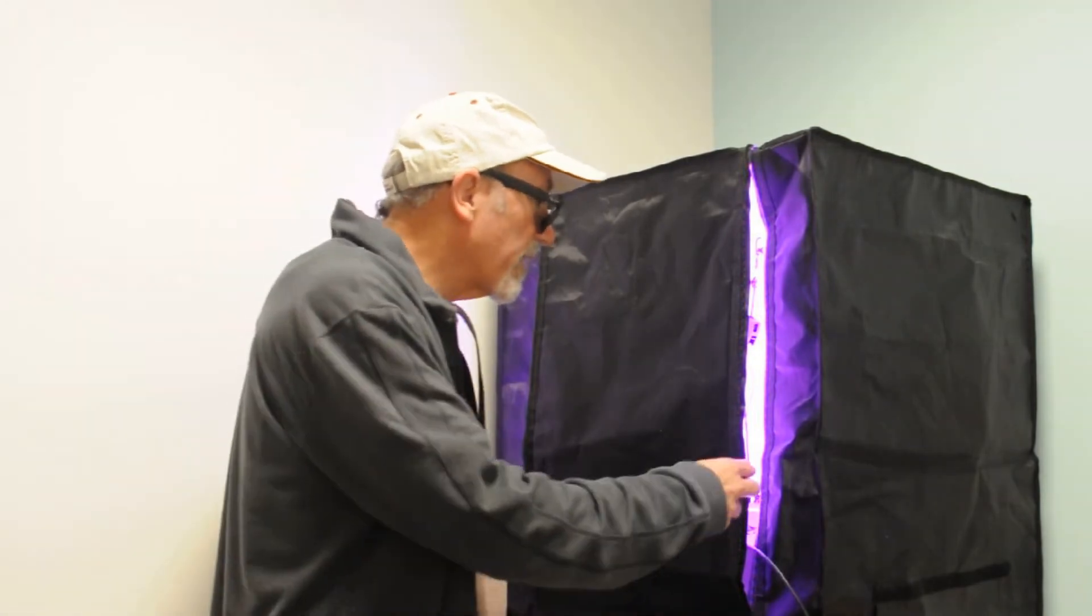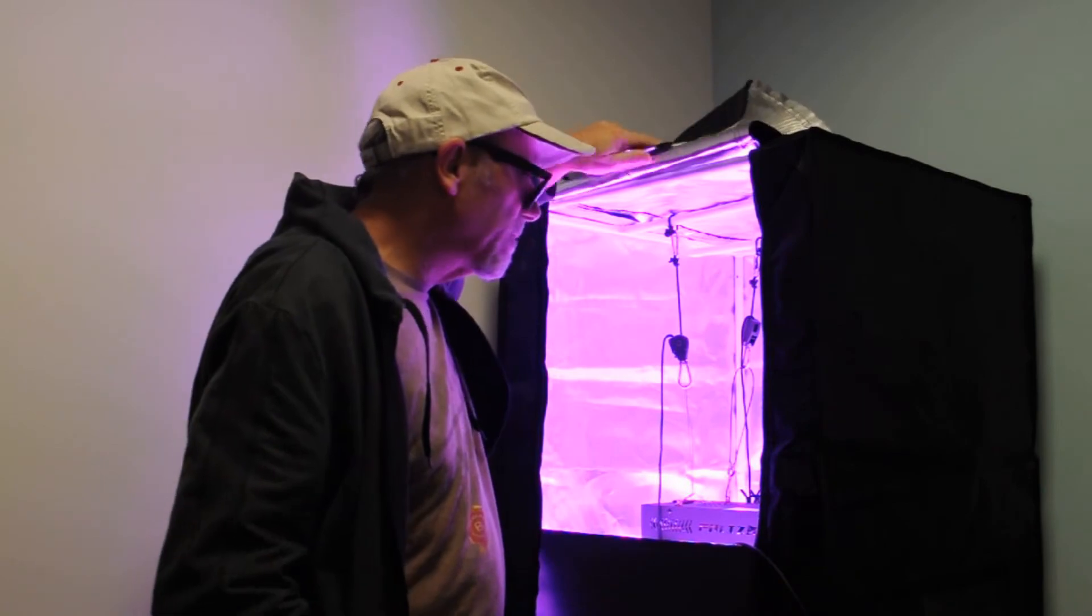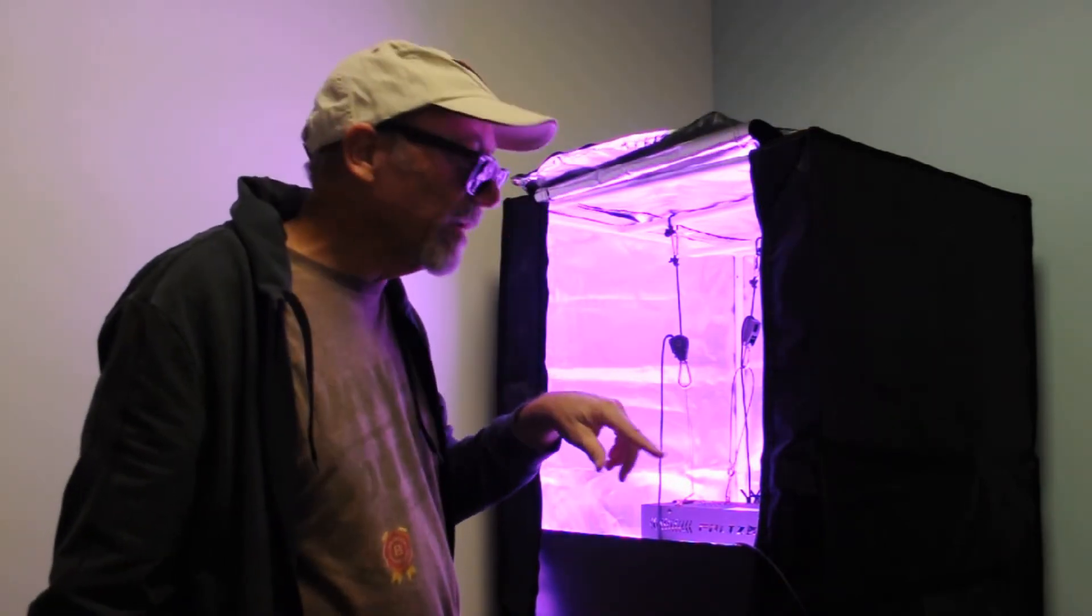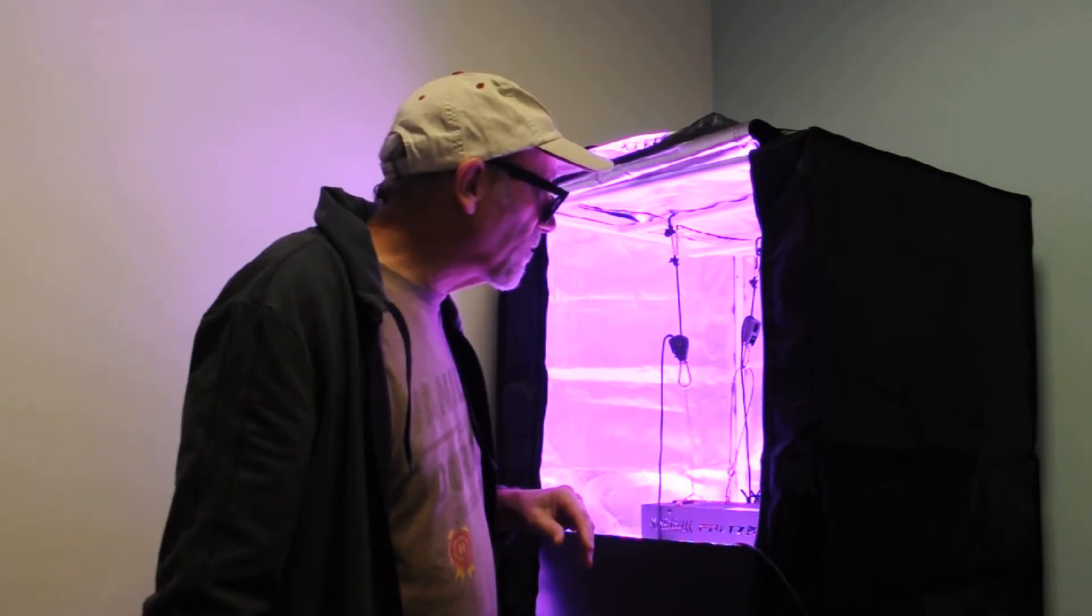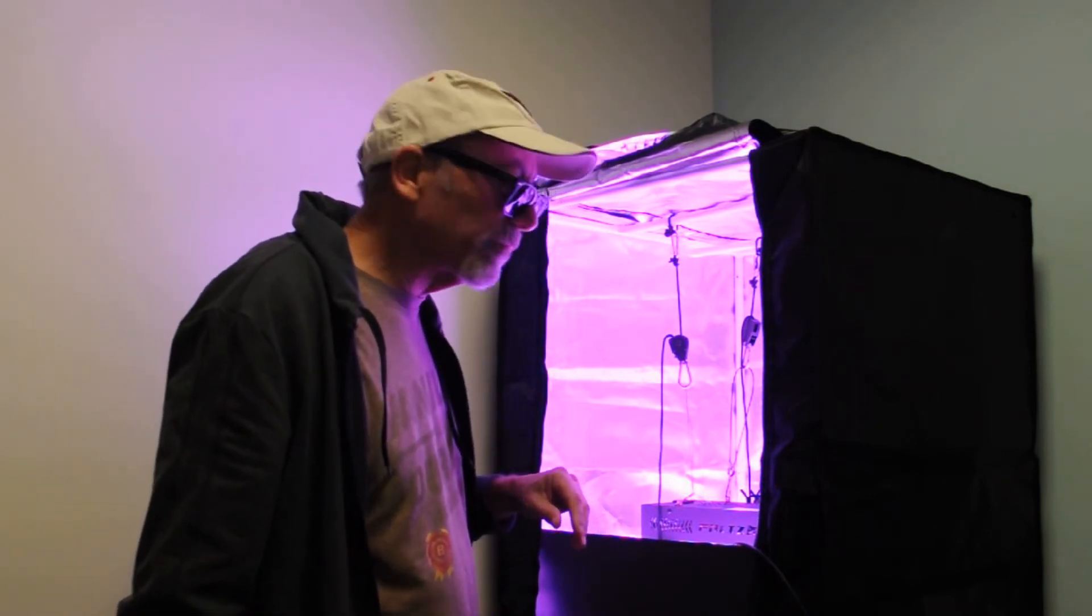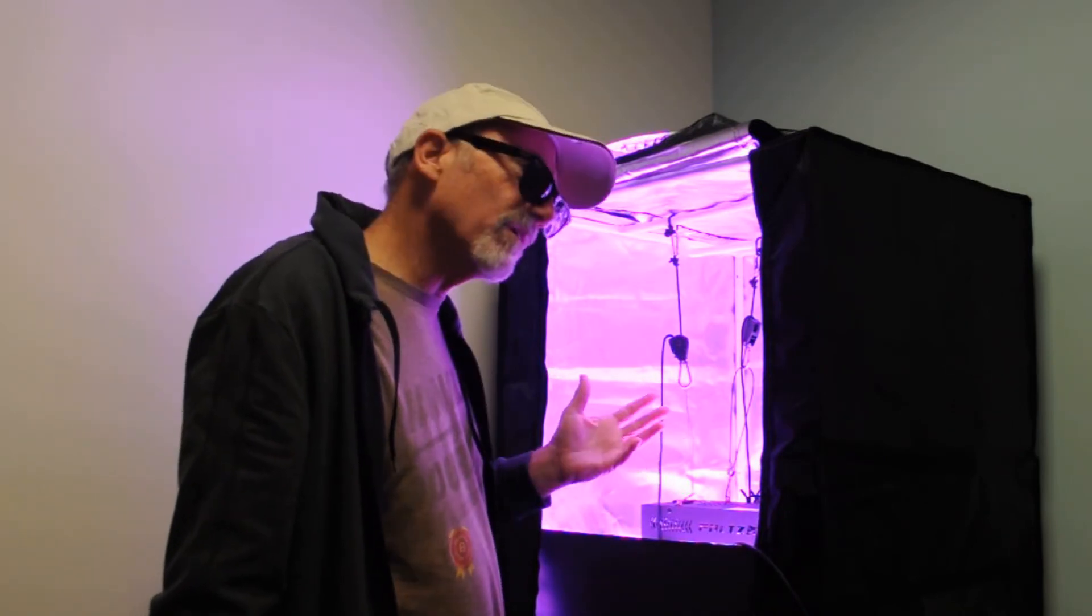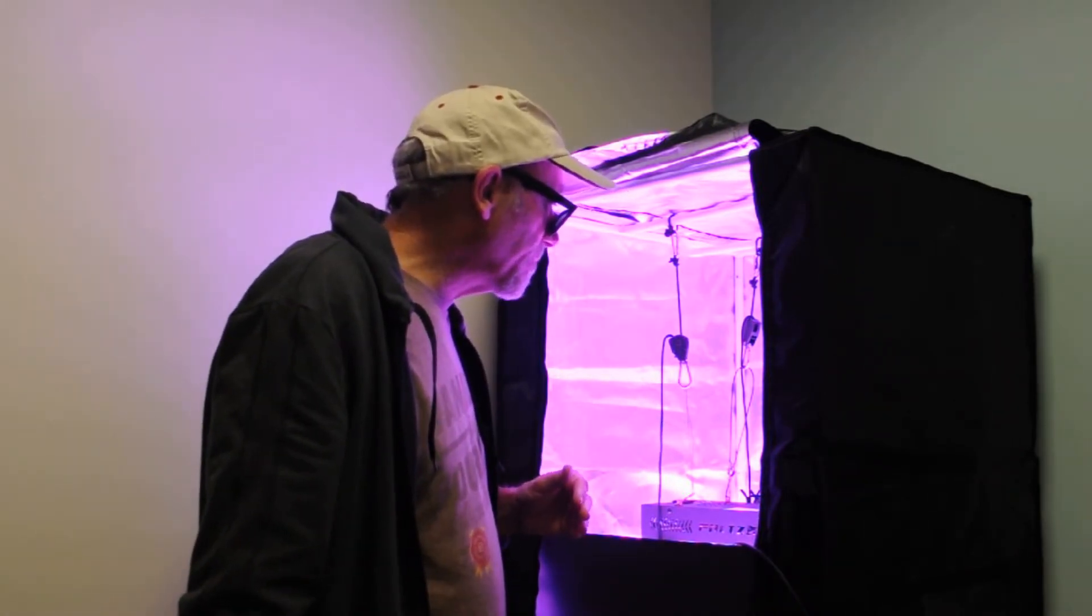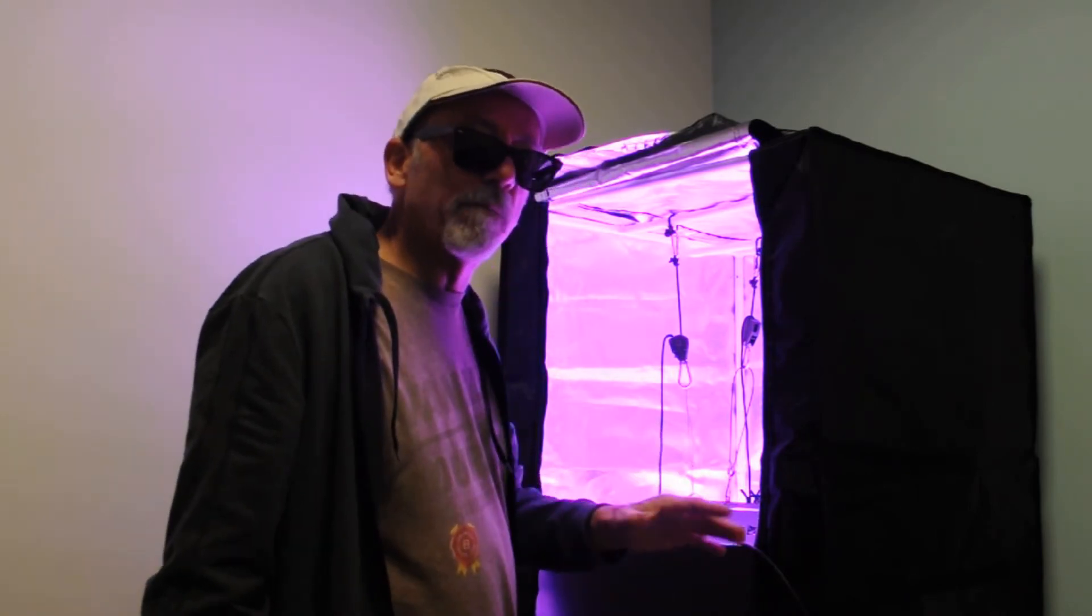One note with this light though, because it has the veg and the bloom switch: just a note, we're using the measurements with both the bloom and the veg light on, so this is full power. I'm not sure the circumstances where you would want to use just the bloom or just the veg because it's basically cutting the power in half. So I'm not really sure how advantageous it is. Anyway, that's up to each person to decide. But like I said, these readings will be full power.